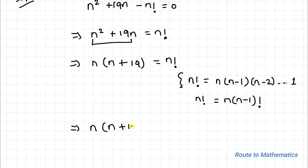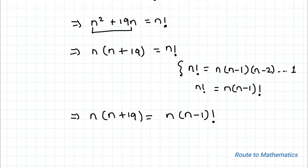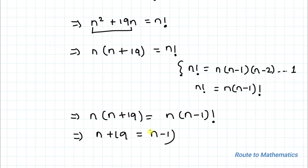n! can also be written as n × (n−1)!. So this implies n(n + 19) = n × (n−1)!. Now, dividing both sides of the equation by n, we have n + 19 = (n−1)!.